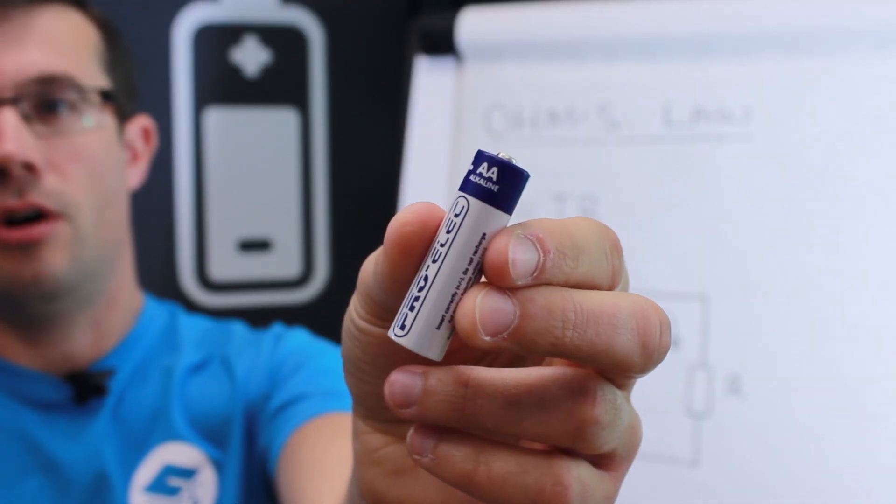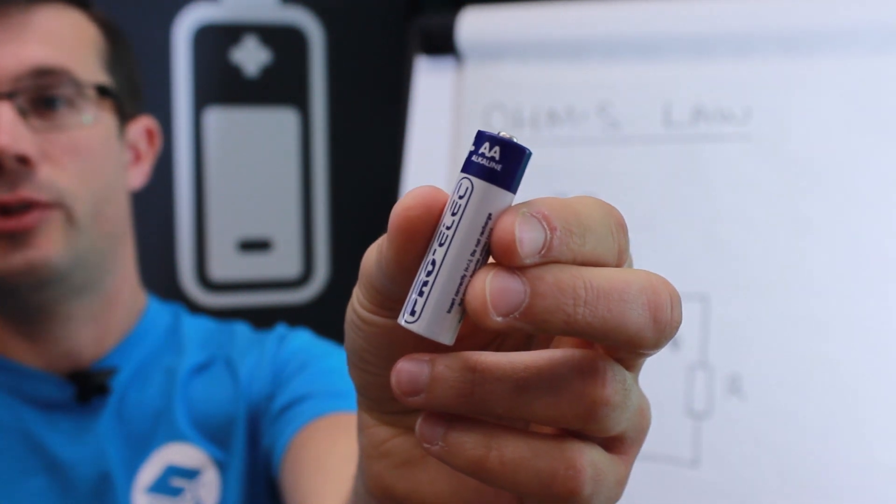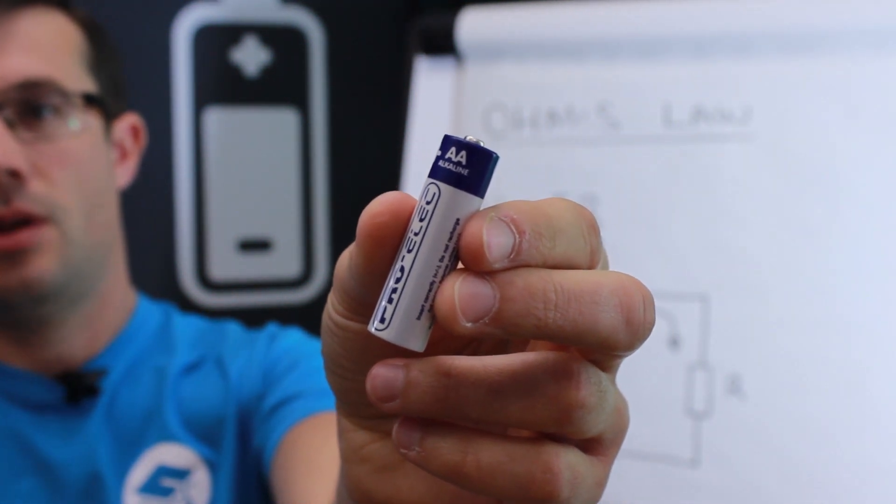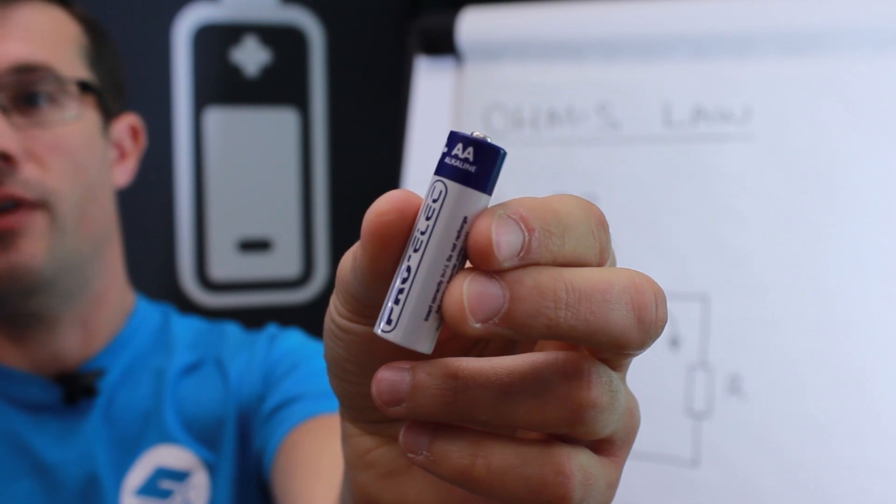So this is a one and a half volt AA battery and this provides the push in the circuit. A higher voltage would provide more push.